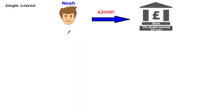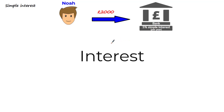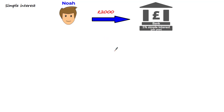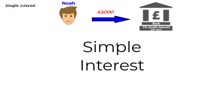If a guy called Noah has £2,000 and he invests it into a bank that pays 5% simple interest per year, he'll make something called interest, which is based off of the amount he invested and the interest rate offered by the bank. The interest is the extra money that Noah gets every year on top of the £2,000 in return for investing his cash. And when this interest paid by the bank is the same every year, this is known as simple interest.